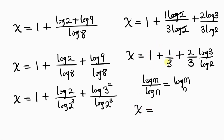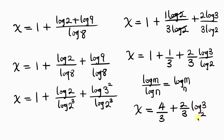Let's simplify a bit. 3 times 1 is 3, plus 1 is 4. So we have 4 over 3, plus 2 over 3 log base 2 of 3. This expression becomes x equals 4 over 3 plus 2 over 3 log base 2 of 3, and this is our final answer.